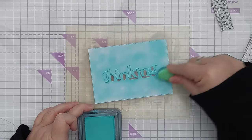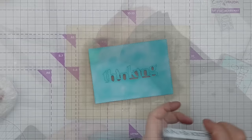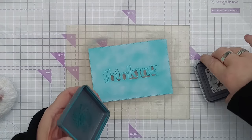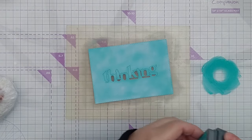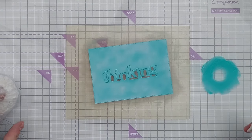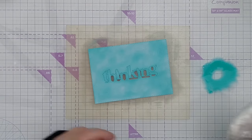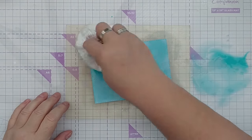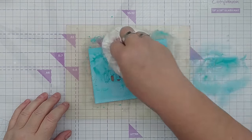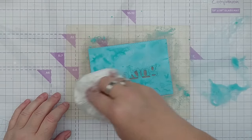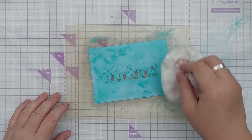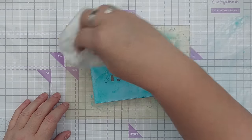Next I smooshed on some Peacock Feathers, so I put the Peacock Feathers on my glass mat, added some water to turn it into a paint, picked it up with my smoosher, and then smooshed it all over the Salvage Patina, and then I dried that with my hairdryer. If you'd like to know how to make a smoosher I do have a video for that and I will leave a link in this video's description.